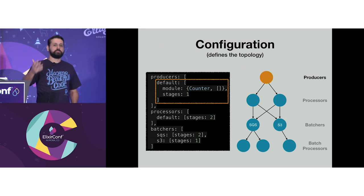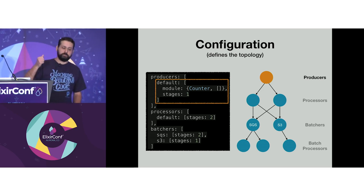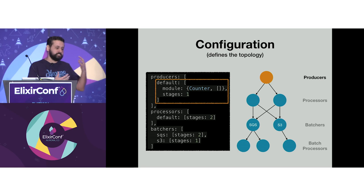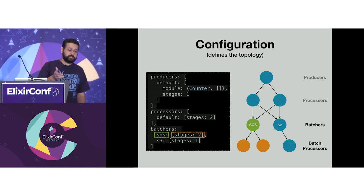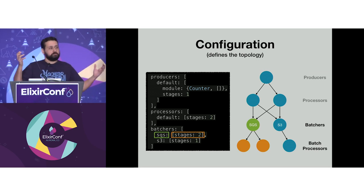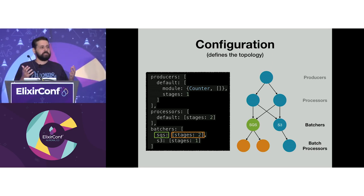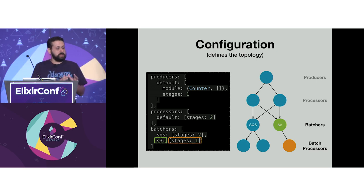Here's a more complex pipeline, because now we want to use batches. You can get an order of magnitude improvement in throughput if you use batches when working with S3. Most Amazon services support batches. In that case, the topology changes because now I'm defining two batchers: one producer, two processors, one batcher called SQS with two stages, and one for S3. Messages get processed, and depending on information retrieved from the message, they get forwarded to the appropriate batcher.